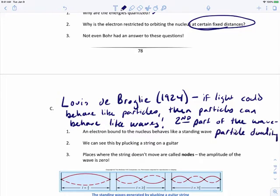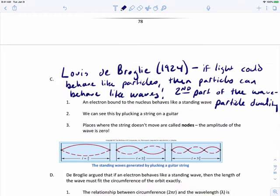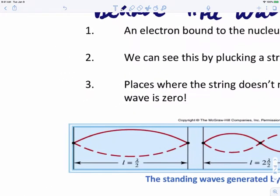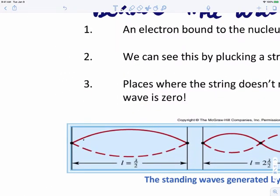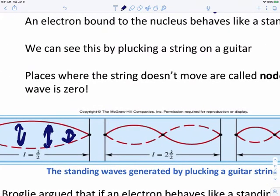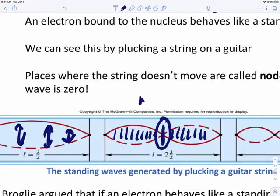To explain this, Louis de Broglie said that an electron bound to the nucleus behaves like a standing wave. When we pluck a string, like what we're seeing here, the string vibrates all over. But if we put a clamp right on the middle of the string and we pluck the string, the string can vibrate over here and on the right hand side, but right in the middle, there's no vibration.